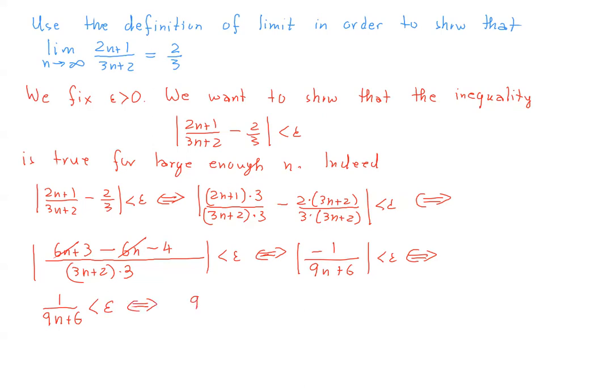And we invert both fractions and the direction of the inequality changes. And now we isolate n. So we have 9n is greater than 1/epsilon minus 6, which is the same thing as n being greater than 1/9 times (1/epsilon - 6). We multiply both sides by 1/9.